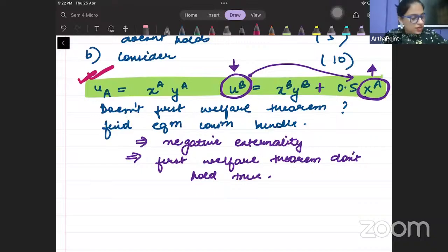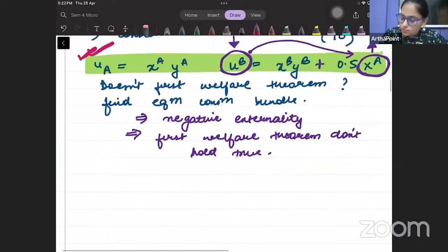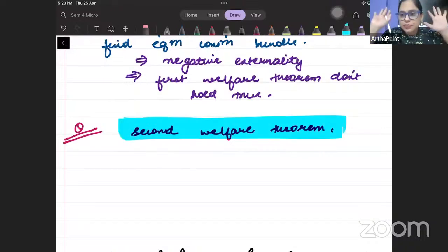After that, you can go ahead and you can see questions on second welfare theorem. Next topic will be second welfare theorem. Again, similar things will come. What is second welfare theorem? Does second welfare theorem differ from first welfare theorem? Under what circumstances second welfare theorem will hold true? So everything related to second welfare theorem can be asked in exam. So this is a base that I have set for you, that this is the minimum you should know.